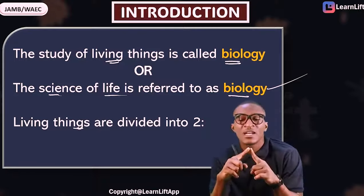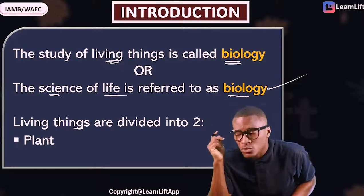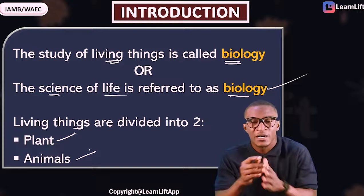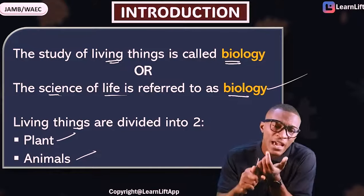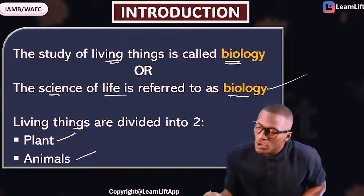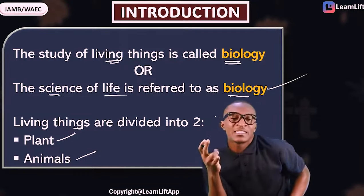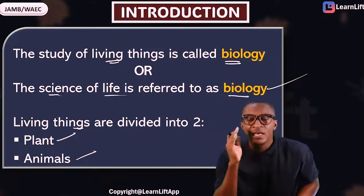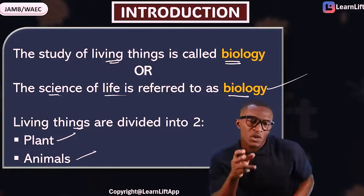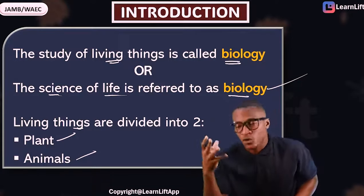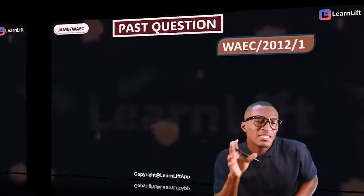When we talk about living things, two things should come to mind: number one, plants, and number two, animals. So living things can be grouped into plants and animals. In this introduction we say that the study of life is biology, and that life is divided into plants and animals. Anytime you talk about living things, you are either a plant or an animal. Of course, we are animals.